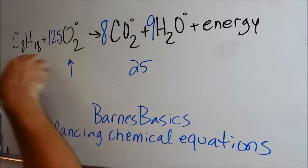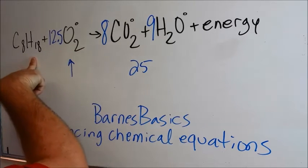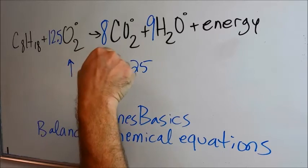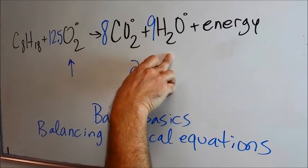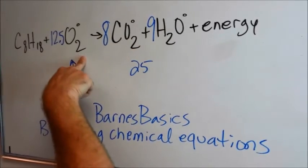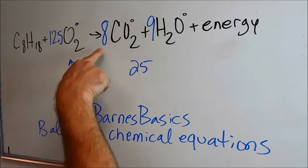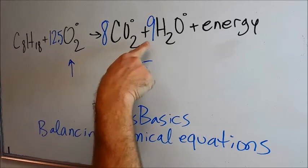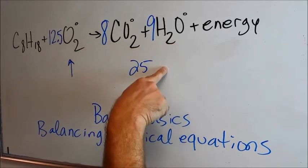Right now we have eight carbons, eight carbons. We have 18 hydrogens. Nine times two is 18. Twelve and a half times two is 25 oxygens. We have eight times two is 16 plus nine, that's 25. So I want you just to double everything.